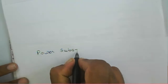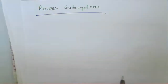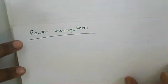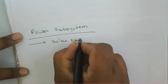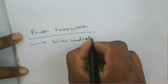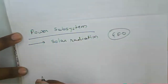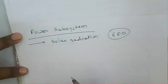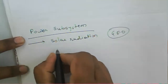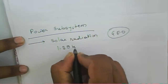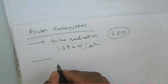The next subsystem is the power subsystem. A satellite depends upon solar radiation, so whatever solar radiation falls on the solar panels is used to generate power. For a geostationary satellite, there is more solar pressure and large solar radiation intensity — approximately 1.39 kilowatts per meter square — and that radiation is converted into electrical energy.